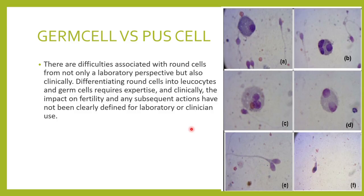It is difficult to differentiate exactly between a germ cell and a pus cell. You may have to use special stains to find out whether it is a germ cell or a WBC. You also need to correlate clinically and then come to a conclusion about what these cells could be.